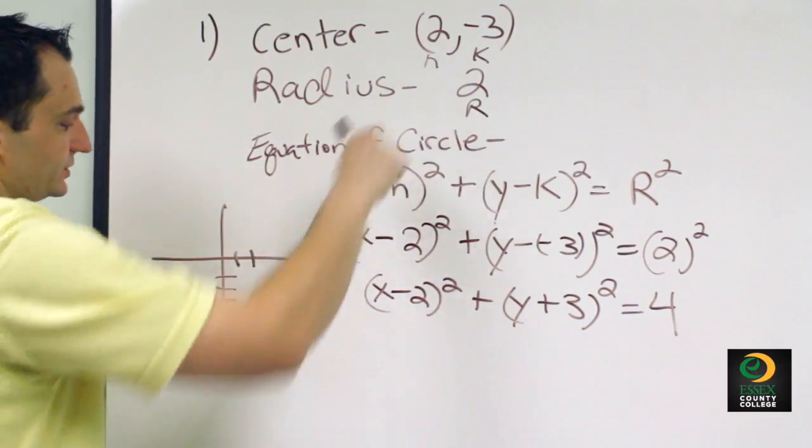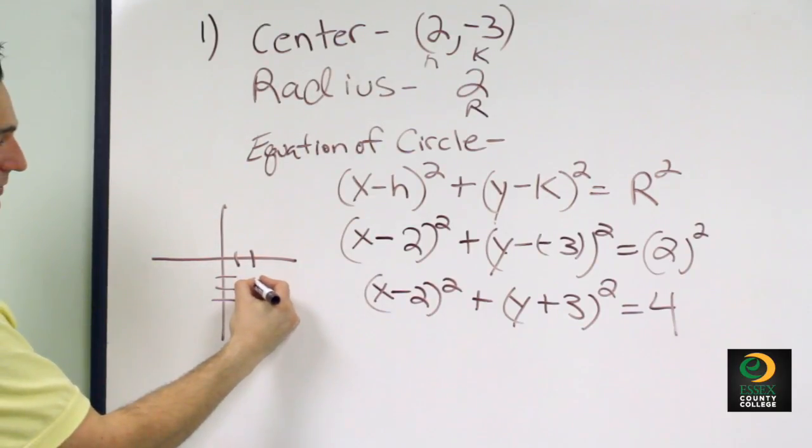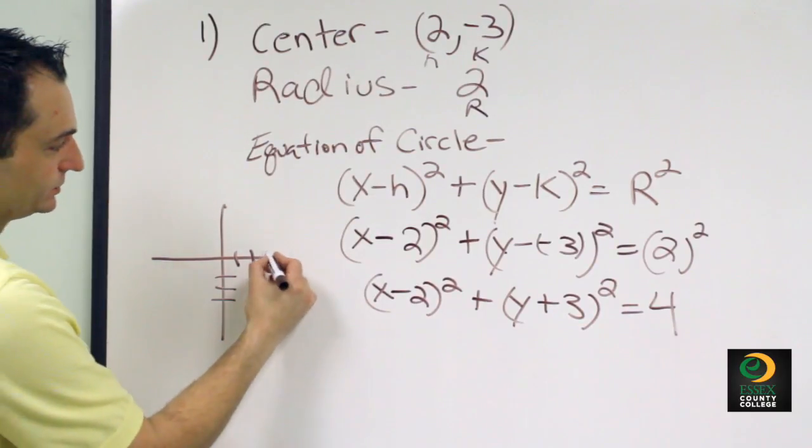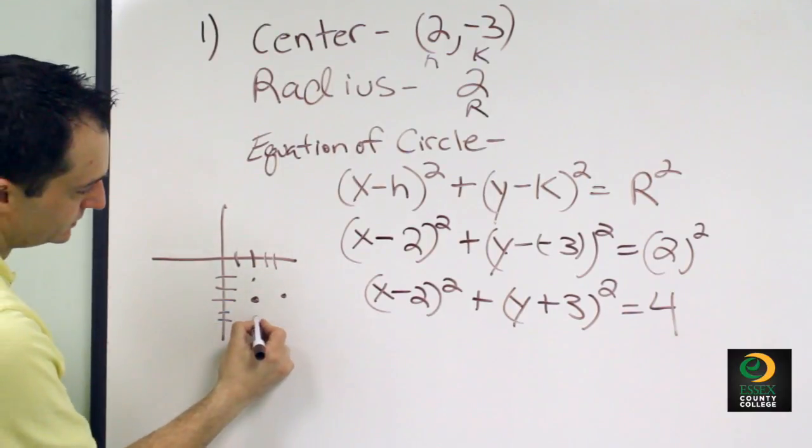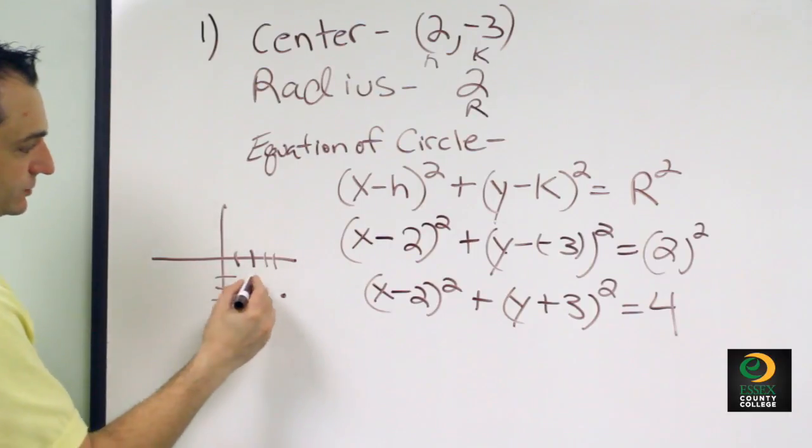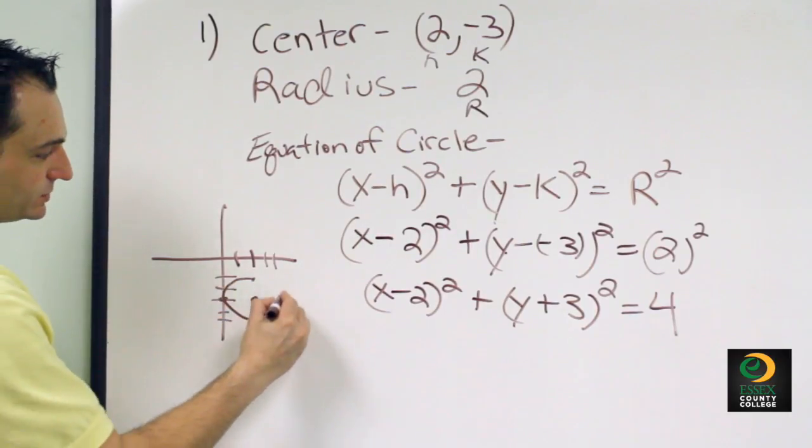And the radius is 2. So from this point, we're going to go up 2, we're going to go to the right 2, we're going to go down 2, and we're going to go to the left 2, which will be right here. Then we're just going to connect the outer dots into a circle.